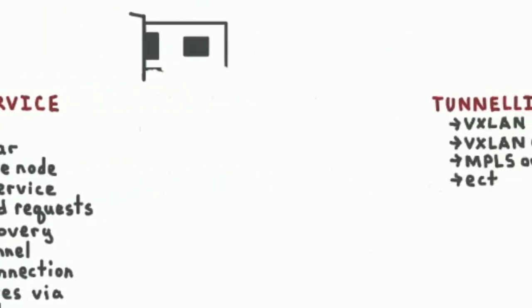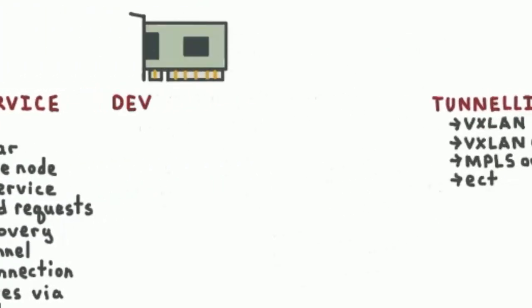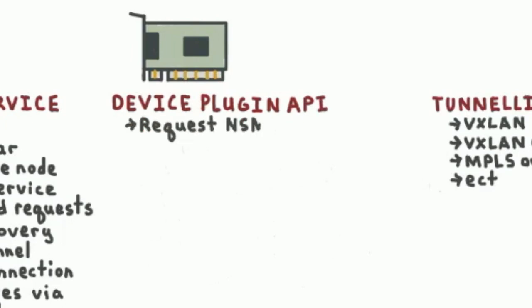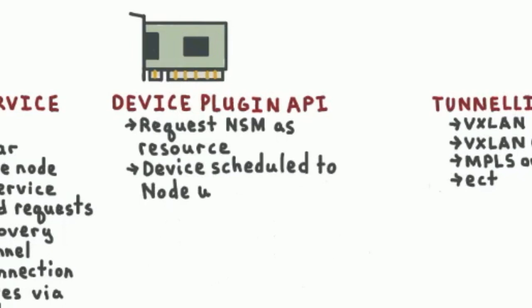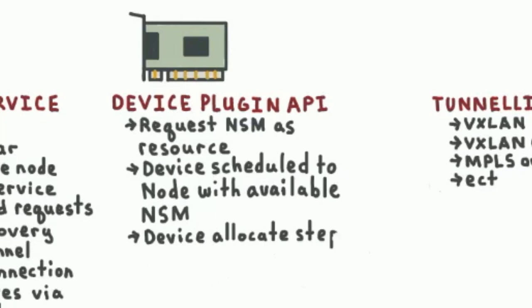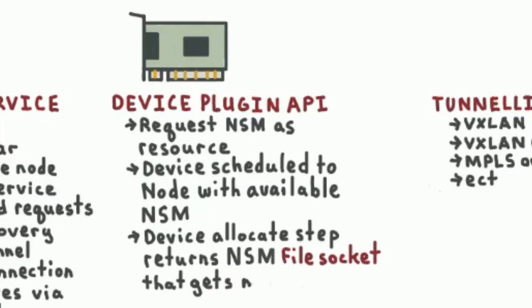We use a completely unmodified device plugin API. When you deploy your pod, you request an NSM as a resource. Then you go through normal pod deployment — the pod is scheduled to a node that has an NSM available. The device manager carries out the allocate step, and one of the things that comes back from that allocation is the mount point for the NSM file socket. Then you run the pod normally and the NSM file socket gets mounted, as is normal for the device plugin.